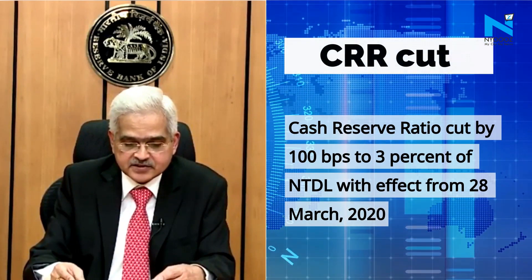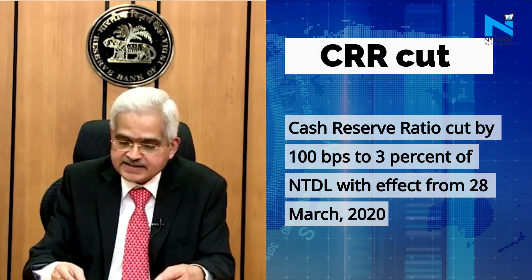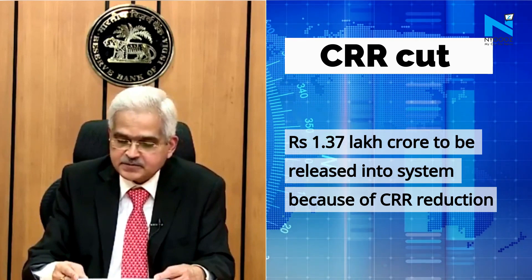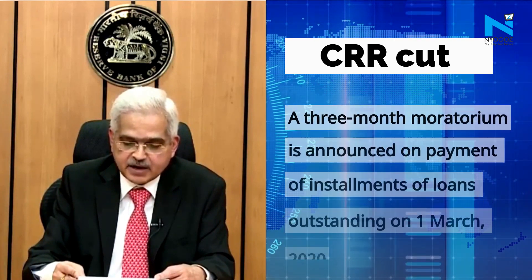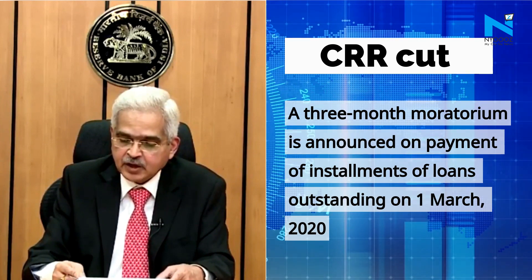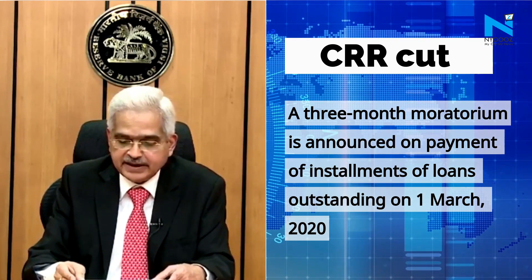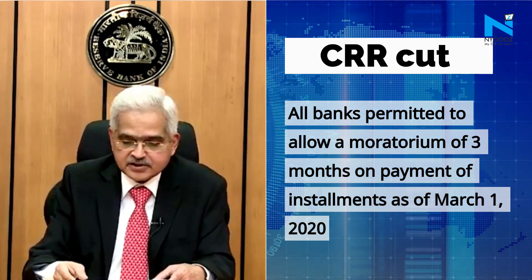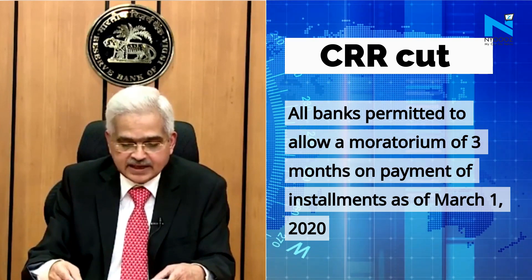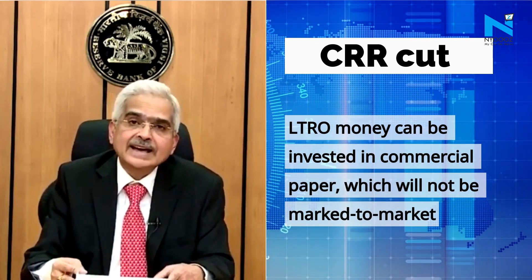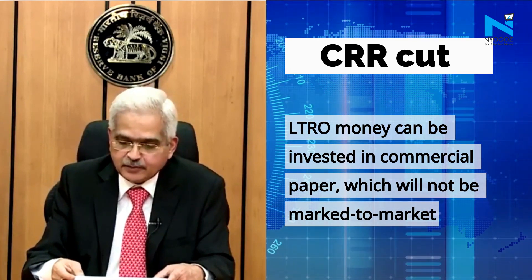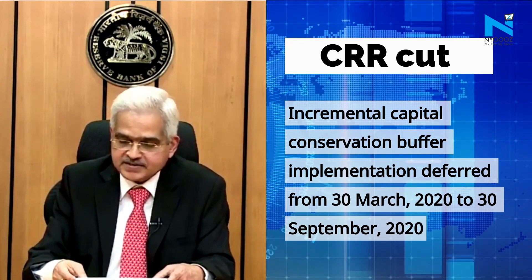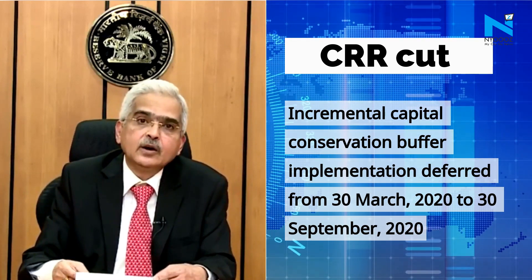To help banks tide over the disruption caused by COVID-19, it has been decided to reduce the cash reserve ratio of all banks by 100 basis points to 3% of net demand and time liabilities (NDTL), with effect from the reporting fortnight beginning March 28th for a period of one year. This reduction in CRR would release primary liquidity of about Rs. 1,37,000 crores uniformly across the banking system in proportion to liabilities of the constituents rather than in relation to their holding of excess assets.